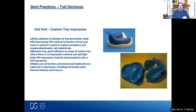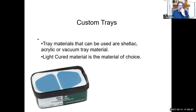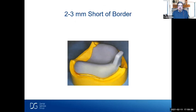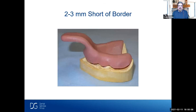The second visit is the custom tray impression. When making a custom tray, I make it about two to three millimeters short of the periphery on the border when doing full dentures — this allows you to border mold these cases, which is very important. I use mostly a shellac material or a light cure material for custom trays. Should you have tissue stops? I like tissue stops on full cases. We'll put a wax spacer on the ridges and on the palate — three tissue stops on the lower and sometimes four on the upper — to prevent too much pressure on the tissue and create space for the impression material.